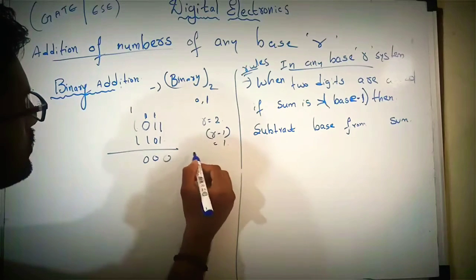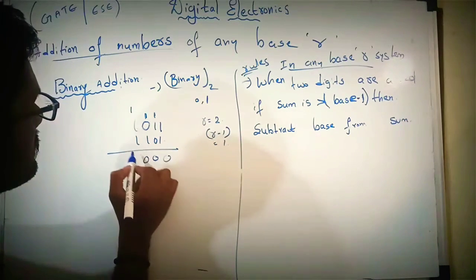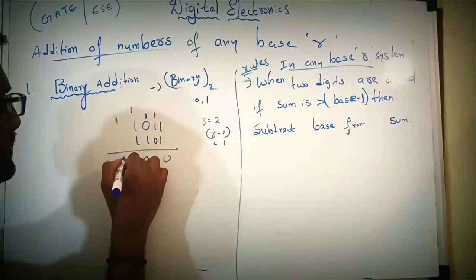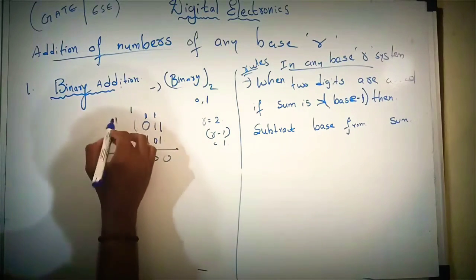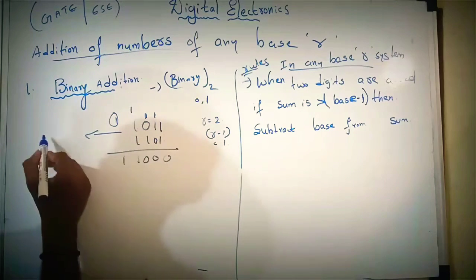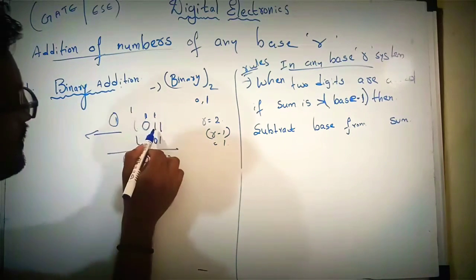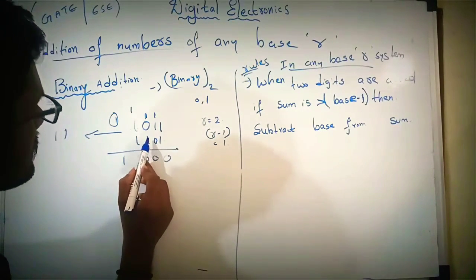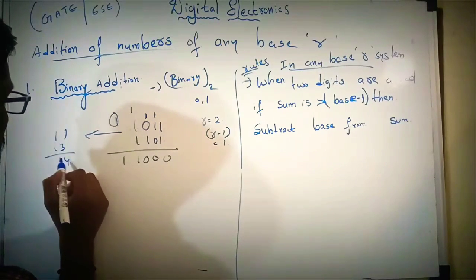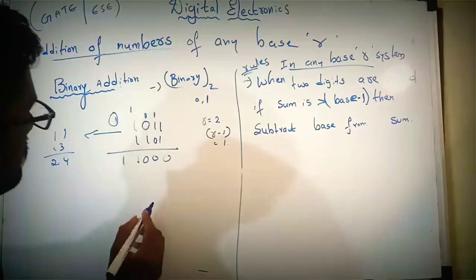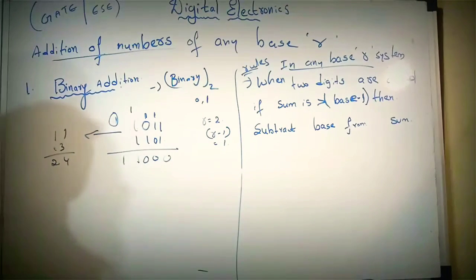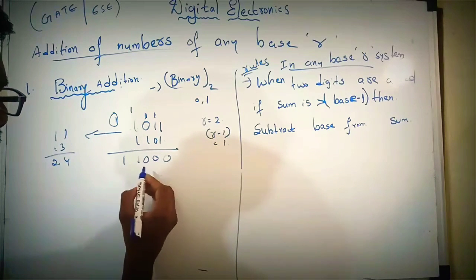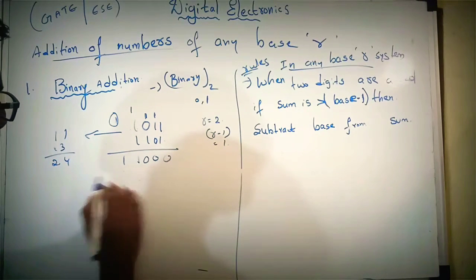When we add, we will get 2, and 2 minus 2 is 0. 0 plus 1 is 1, and we will get carry as 1 here. Let's check the number: this is 8 and 10 and 11. This is 8 plus 12 plus 12, this is 4, this is 24. This is 1, 2, 4, 8, 16. 16 plus 8 is 24, which confirms the result.